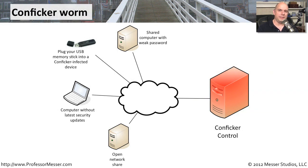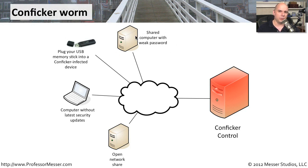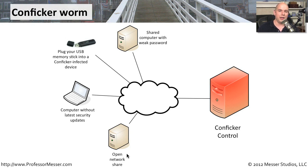Some worms take advantage of every possible vulnerability they can. A good example is Conficker, which became extremely prevalent because it looked for so many different ways into a system — computers with network shares that had no password or weak passwords, USB drives it could infect and spread through as they moved between machines, and a series of vulnerability checks on systems that weren't patched with the latest security updates.